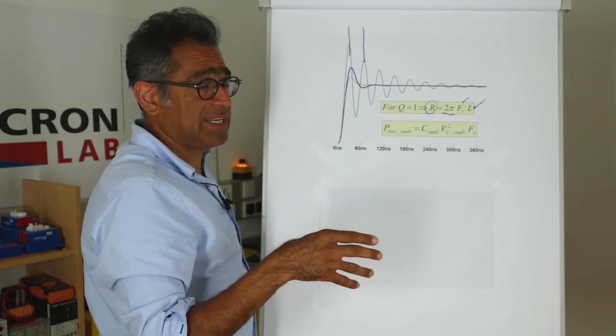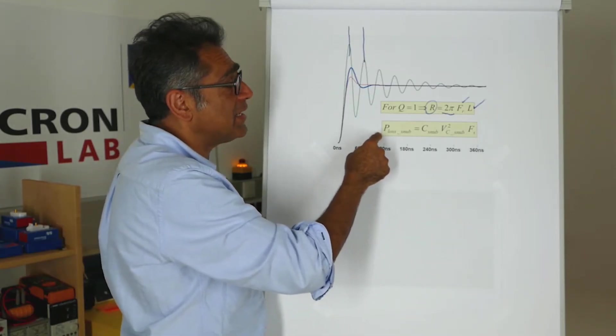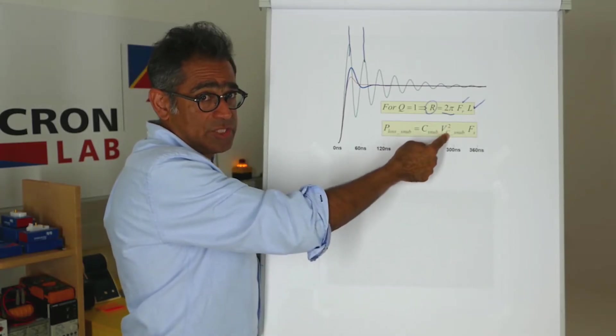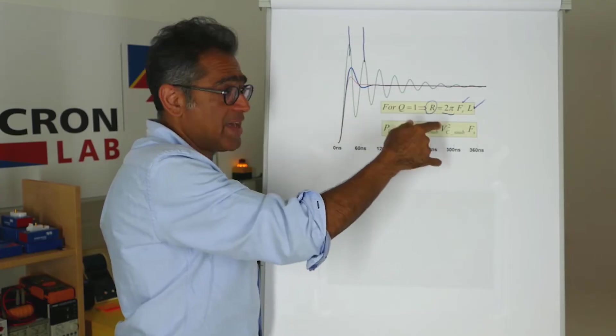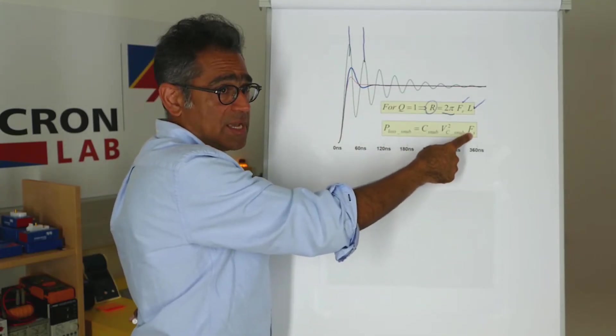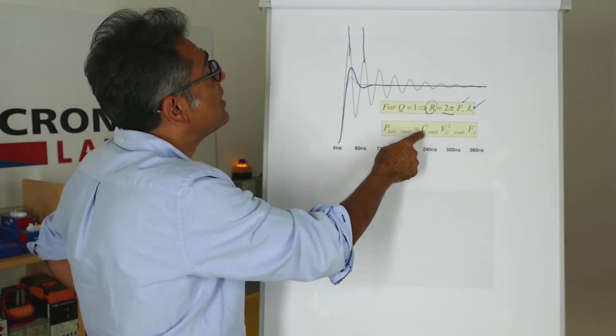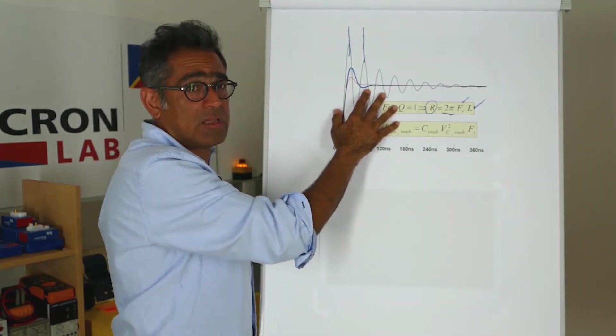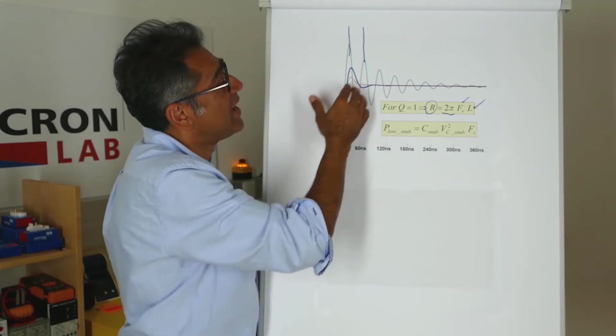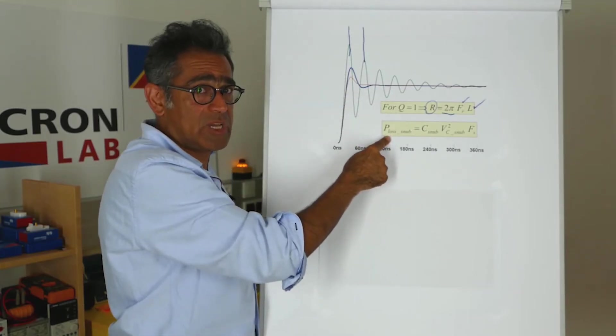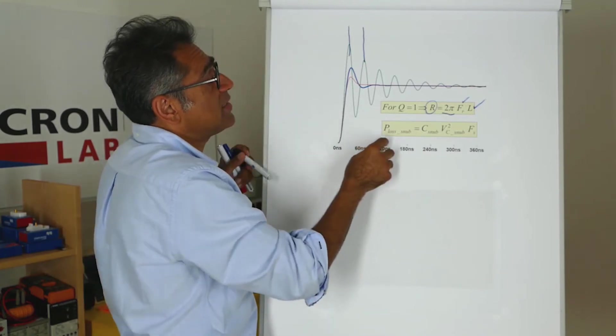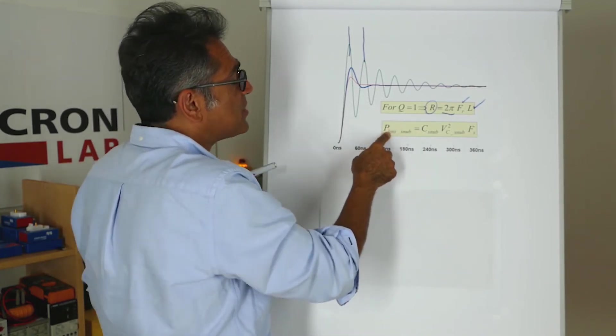But unfortunately, the power loss is actually the snubbing capacitance times the square of the voltage that is across the FET times the switching frequency. And as you can see, if you use too big a capacitor in order to get a very nicely snubbed voltage without any ringing, your power loss might be quite high. So what I tend to do is look at this part first and say, okay, you know what...